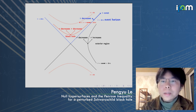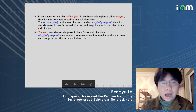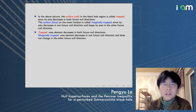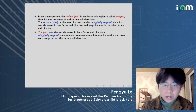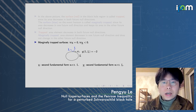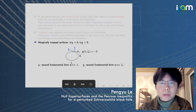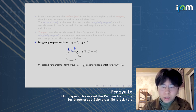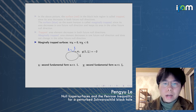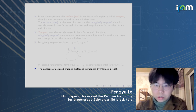The trapped surface and marginally trapped surface are related to the derivative of the area element in the future null direction. To define this more precisely, we look at the null expansion. For a two-dimensional spacelike surface, there are two future null normal directions, and the corresponding null expansion tells us whether the area element increases or decreases in that direction. The concept of a closed trapped surface was introduced by Penrose in 1965.